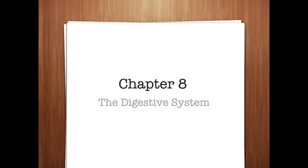Elimination is handled by the rectum and anus, with the word roots 'an' or 'ano,' 'proct' or 'procto,' and 'rect' or 'recto,' which is the control for the excretion of solid waste.